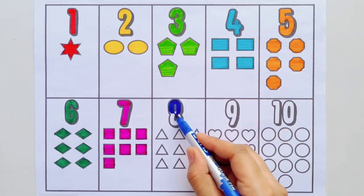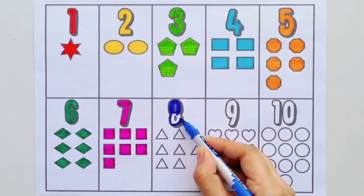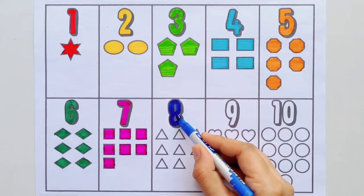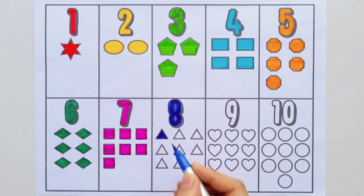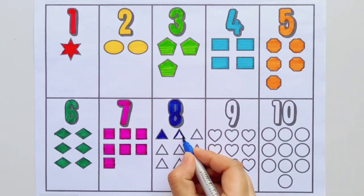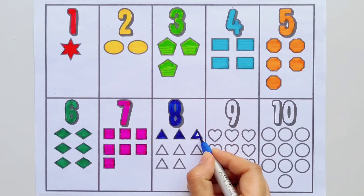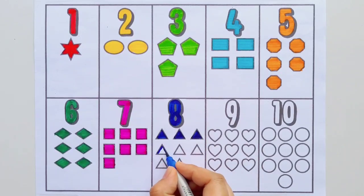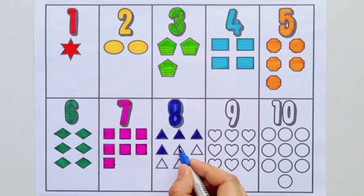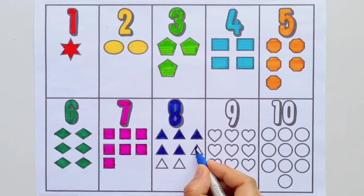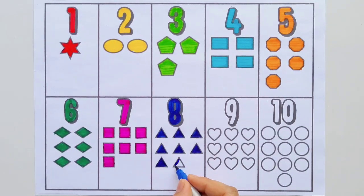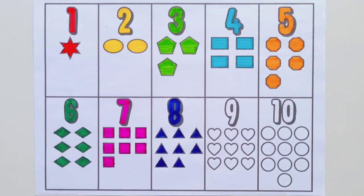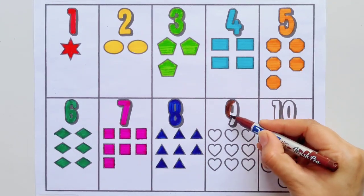Eight. One, two, three, four, one, two, eight. Eight triangles, brown color. Nine.